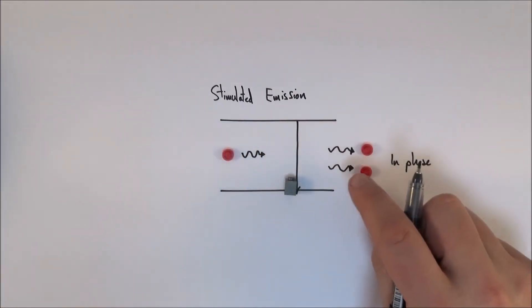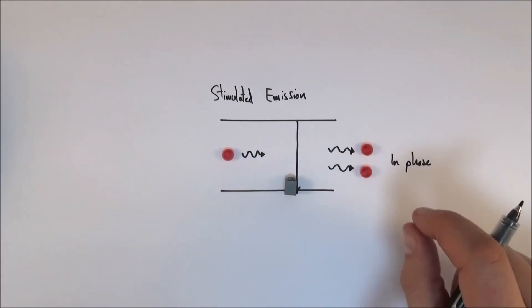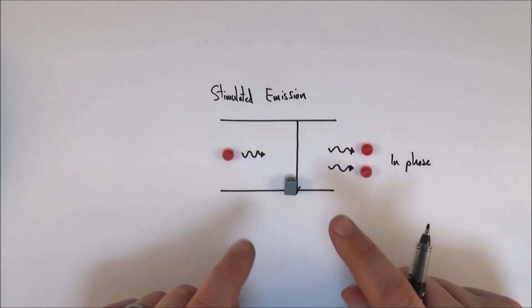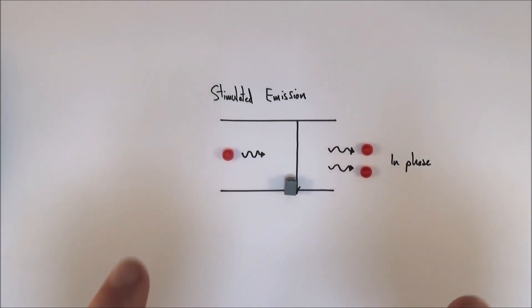Now, the important thing is that these photons that are given out both travel off in the same direction and they're both in phase. Which means if we think about the kind of the wave-like properties, they're both up at the same time and both down. So the two waves are completely in time with each other. Why does it do this?